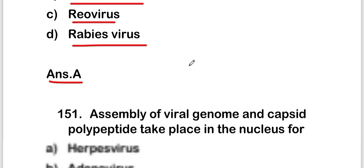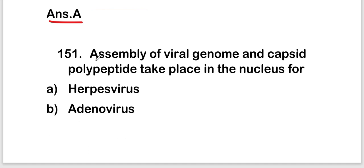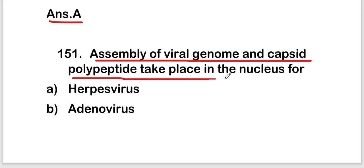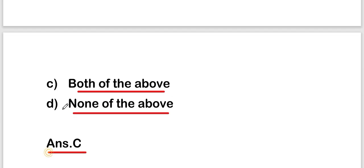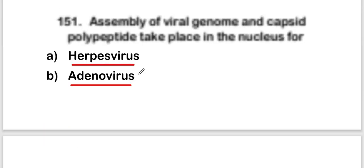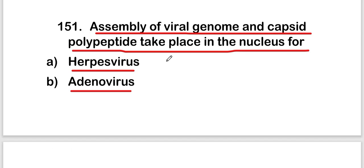The next question is: assembly of viral genome and capsid polypeptide takes place in the nucleus for Herpesvirus, Adenovirus, both of the above, or none of the above? The right answer is option C, both of the above. The assembly of viral genome and capsid polypeptide takes place in the nucleus for both Herpesvirus and Adenovirus.